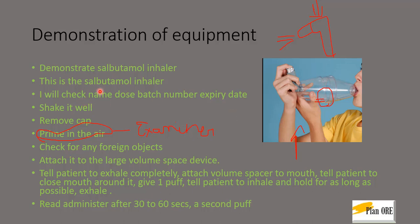Quick recap of the steps: lift the salbutamol inhaler, check the name, dose, batch number, expiry date, shake it well, remove the cap, prime it in air, check for any foreign objects, attach it to the spacer device and give one puff. After approximately 60 seconds, administer a second puff.